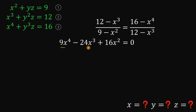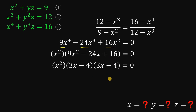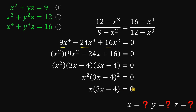Rearranging from highest to lowest power, we get 9x to the fourth power minus 24x cubed plus 16x squared equals 0. We factor out the common monomial factor x squared. The remaining quadratic 9x squared minus 24x plus 16 is a perfect square trinomial, factoring as 3x minus 4 raised to the power of 2. So we have x squared times 3x minus 4 squared equals 0. Taking the square root of both sides, x times 3x minus 4 equals 0, giving x equals 0 or x equals 4 over 3.